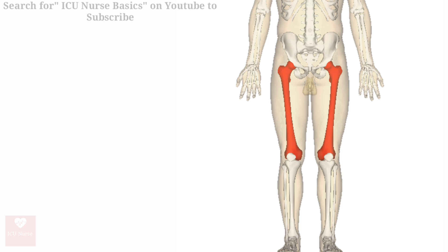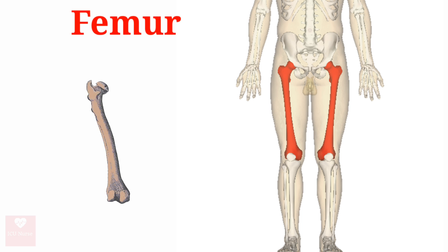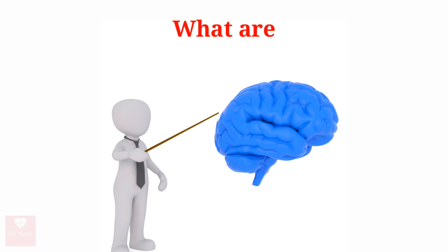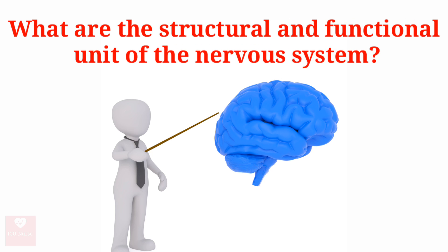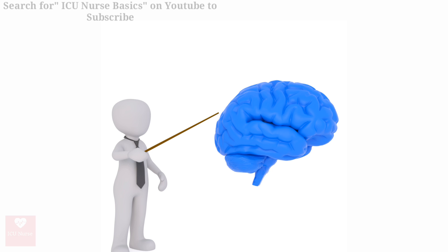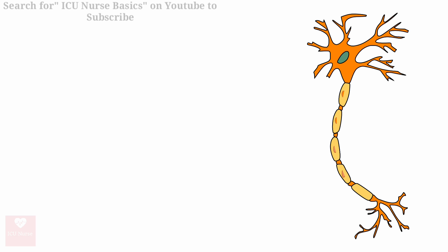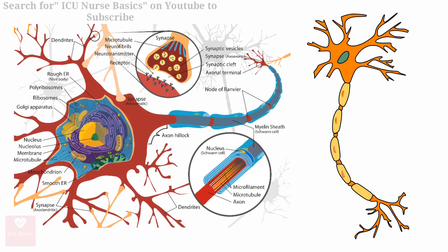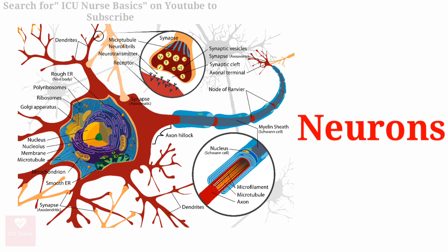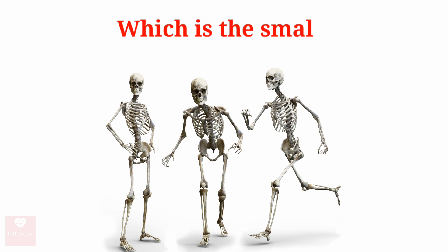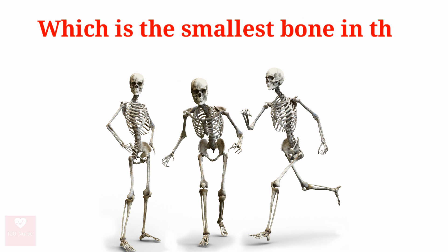Which is the longest and strongest bone in the human body? The longest and strongest bone in the human body is the femur. What are the structural and functional units of the nervous system? The structural and functional units of the nervous system are the neurons.